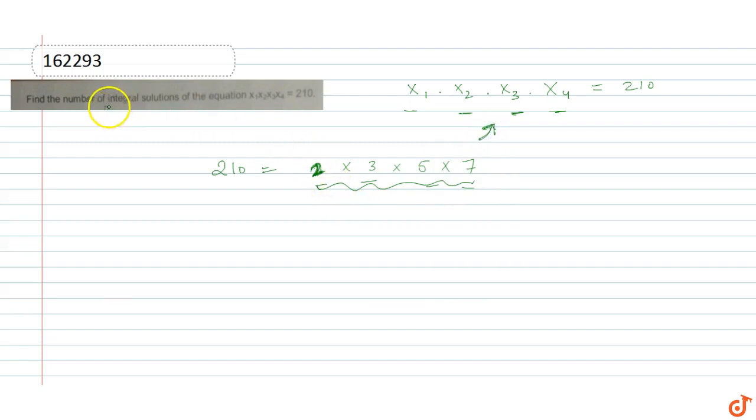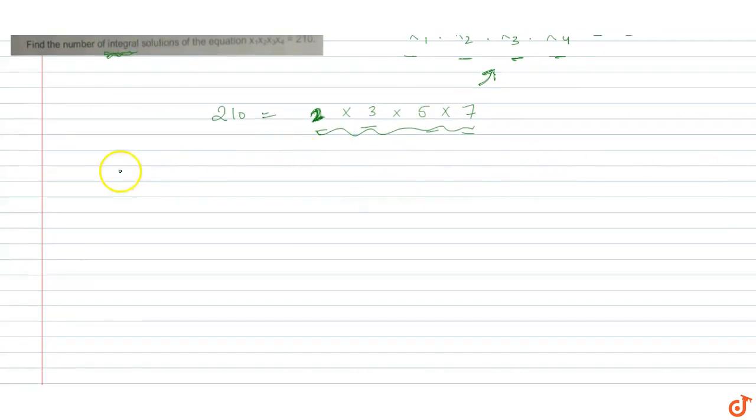They can be integers, integral solutions, so they can be positive or negative also. So if these four primes (2, 3, 5, and 7) are placed in these four boxes, four unknowns, the number of ways of doing this is 4 to the power 4, which is 256.